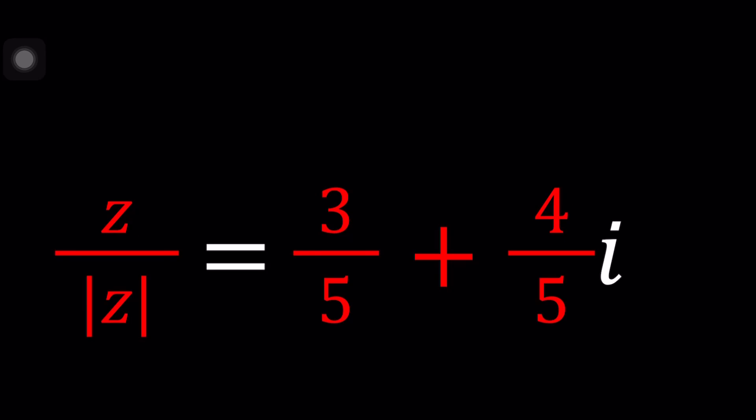Z is a complex number. When you divide it by its absolute value or modulus, you get this interesting complex number which is 3/5 + 4/5 i.